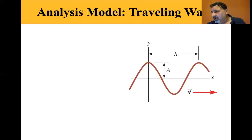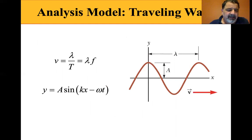Okay. Let's see this. So we're at the analysis model. Things to remember: V is equal to Lambda over T equals Lambda times F. Y is equal to A sine K X minus Omega T.